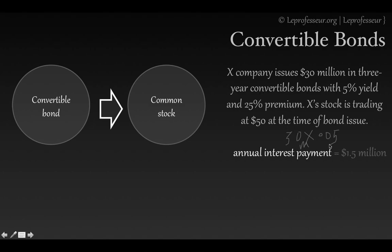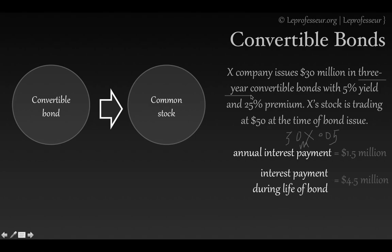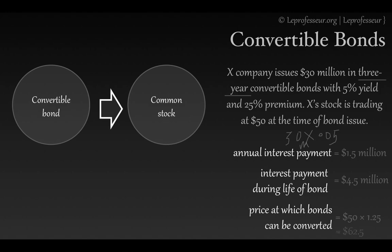Over three years, the total interest payment is $1.5 million multiplied by 3. The conversion price is calculated by multiplying the stock price of $50 by 1.25 (the 25% premium), giving a conversion price of $62.50. At this price, bonds can be converted into shares.